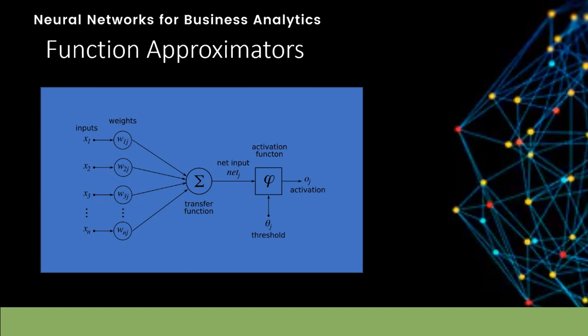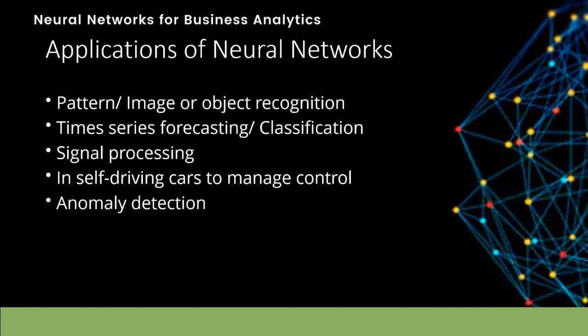Neural networks are function approximators, mapping inputs to outputs, and are composed of many interconnected computational units called neurons. Each individual neuron possesses little intrinsic approximation capability; however, when many neurons function cohesively together, their combined effect shows remarkable learning performance.